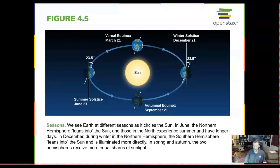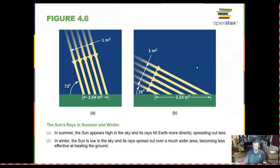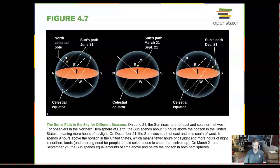We can see the seasons because of the tilt of Earth's axis. This tilt is 23 and a half degrees. The sun's rays are stronger in summer because of the more direct light. In the winter, the sun is at a low angle and produces shallow radiation.